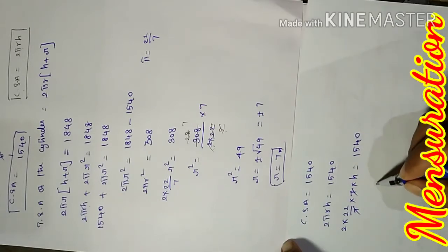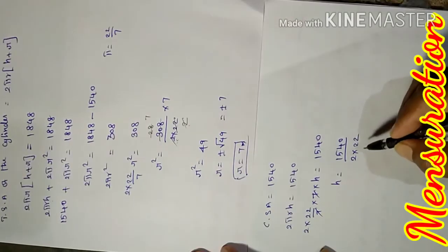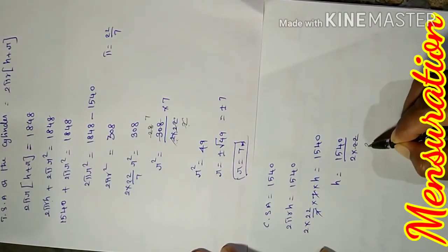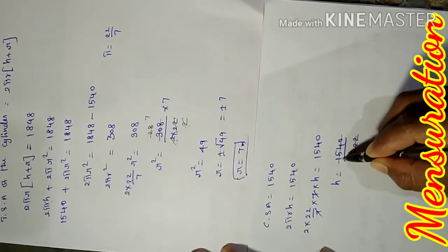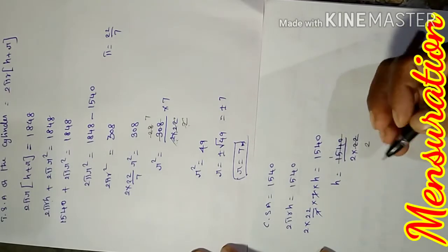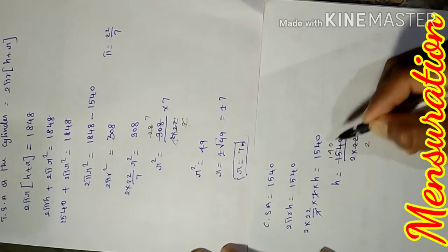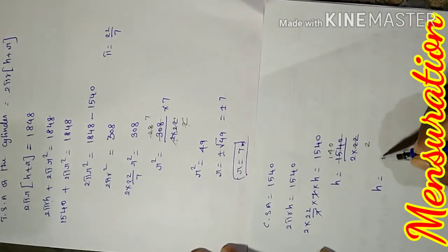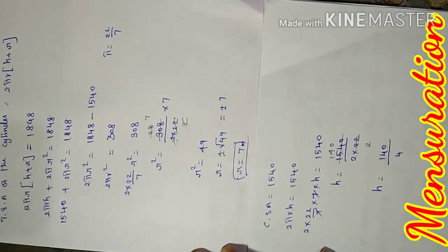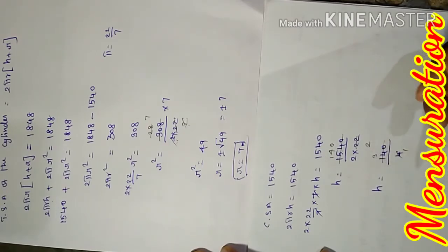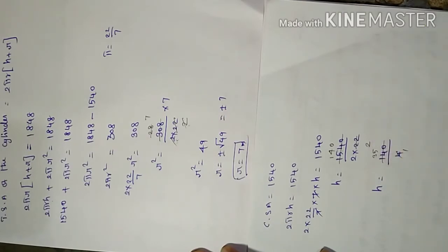Therefore h = 1540 divided by (2 × 22/7 × 7). Simplifying: h = 1540 divided by (2 × 22) = 1540 divided by 44. Cancelling: 1540 ÷ 44 = 35. Therefore h = 35 meters.